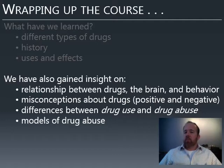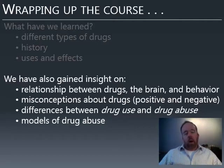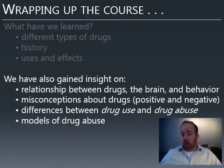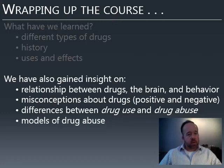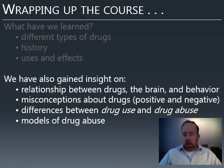This brings us to our model for drug abuse — why do people use drugs in the first place, why do they continue, and why do they become dependent? This also interacts with our society's history with drugs. First, of course, we have the moral model: the idea that people who use drugs were weak-willed or were in some way inferior to those who didn't.